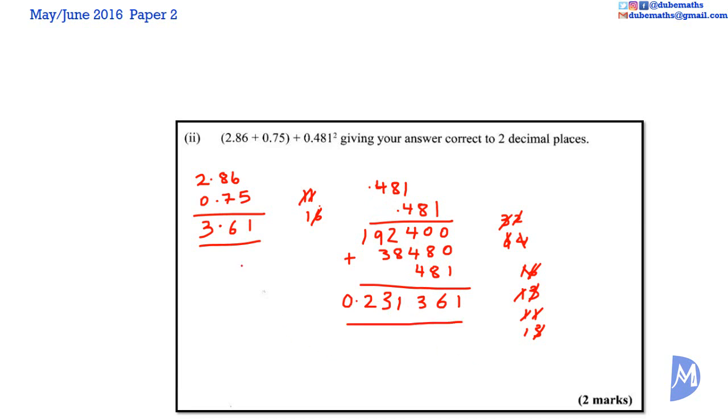So then the question becomes 3.61 added to 0.231361. Using zeros as placeholders. Zero plus 1 is equal to 1. Zero plus 6 is equal to 6. Zero plus 3 is equal to 3. Zero plus 1 is equal to 1. One plus 3 is equal to 4. Six plus 2 is equal to 8. 3 plus 0 is equal to 3.